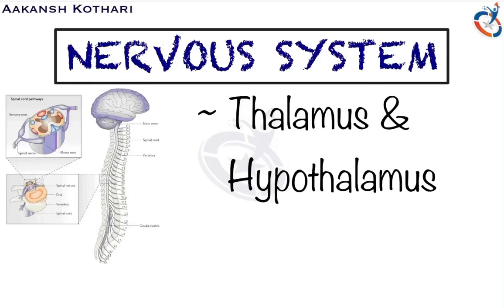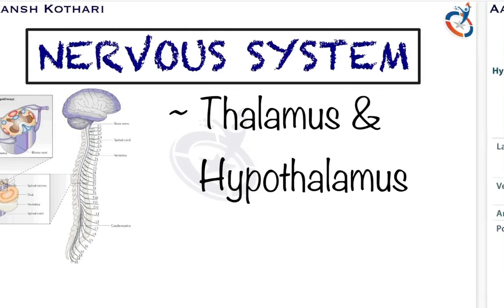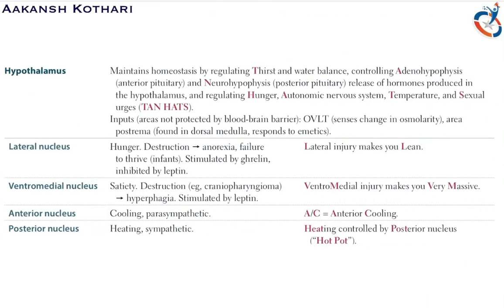Hello everyone, welcome to the module on the nervous system. In this module we will talk about two important anatomical structures of the brain and their functions — that is, the thalamus and hypothalamus. Starting with the hypothalamus, the hypothalamus is the primary